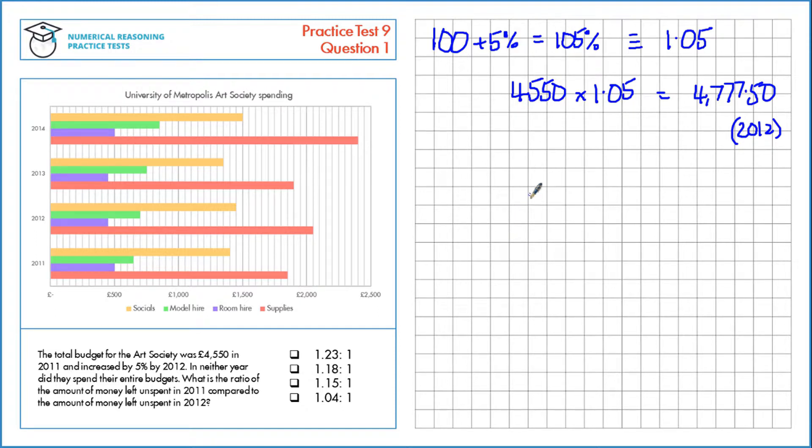Next we need to find the unspent money in both years. So for example, for 2011, we're going to add up all of the spent money and take it away from the budget, which is £4,550.